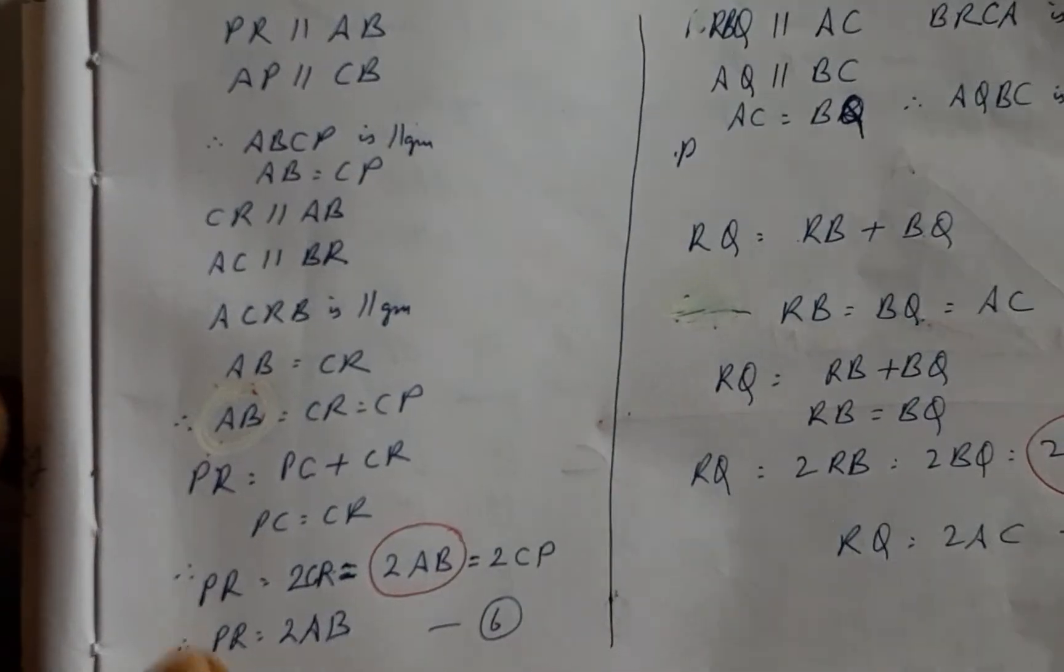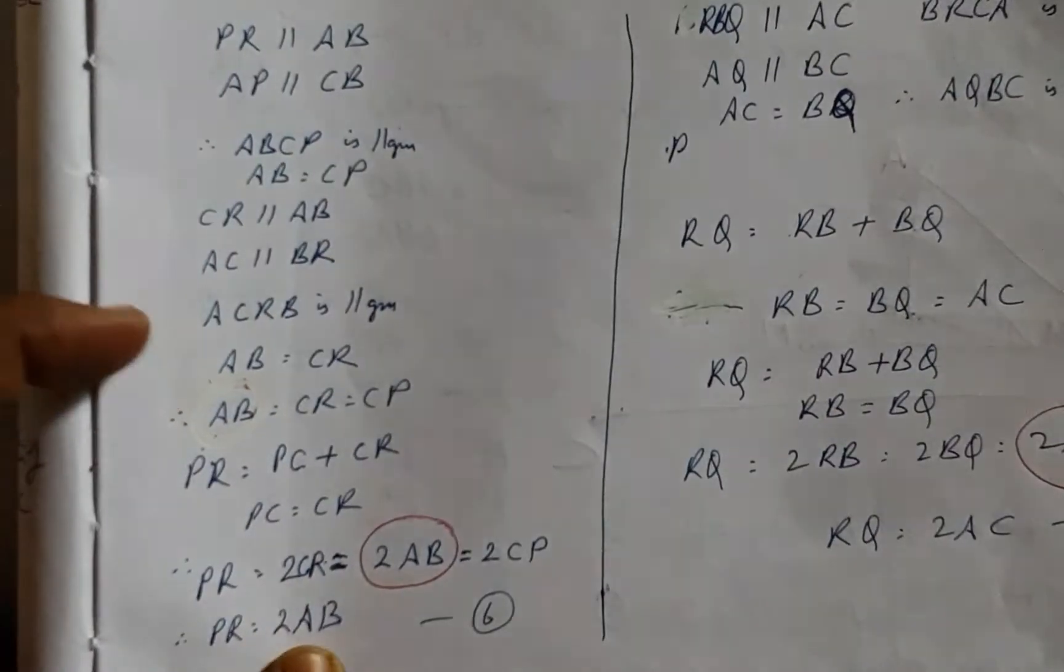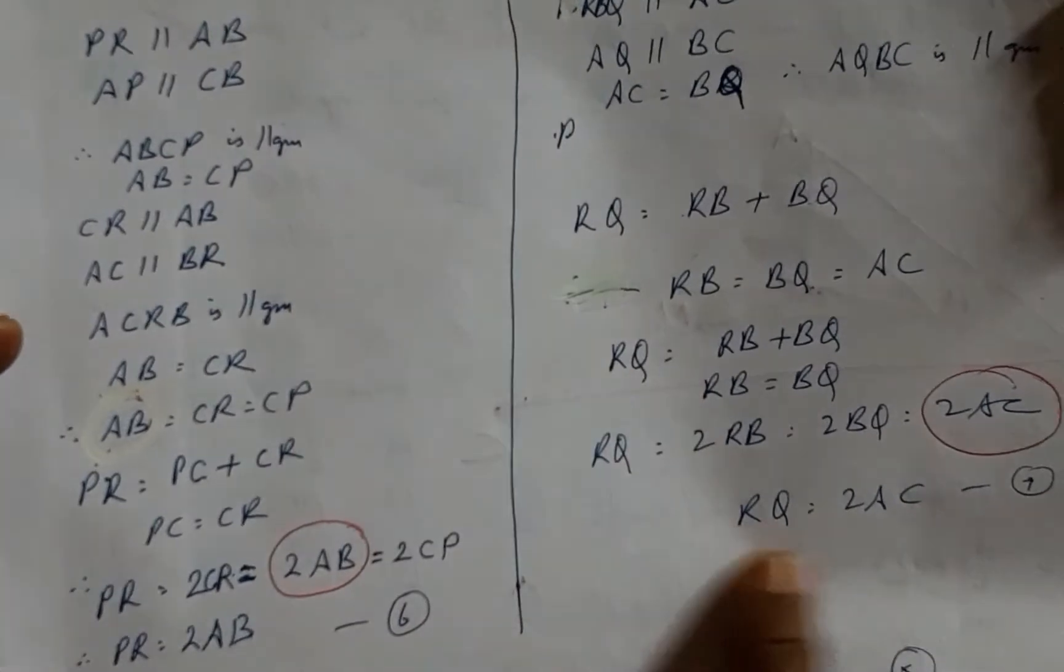On similar lines, we can establish that PR is twice AB and RQ is twice AC.